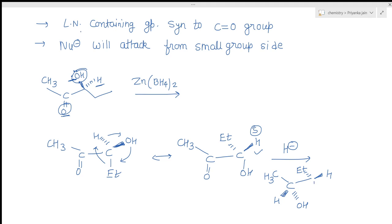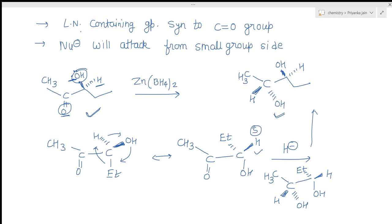Writing the final product: keep the existing groups (Et, H, OH, CH3) as given, and at the product carbon, H is above the plane and OH is below the plane. This is your major product from the anti-Cram's rule. I hope this topic is now very clear. If you have any problems, please comment. If you like the videos, please share them with other students. Thank you.